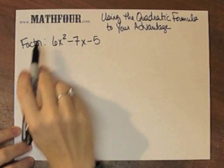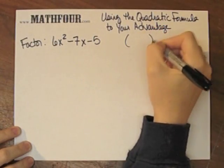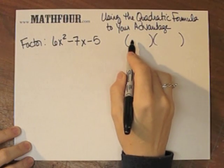Using the quadratic formula to your advantage, we're going to factor this mess, which we can make two brackets.